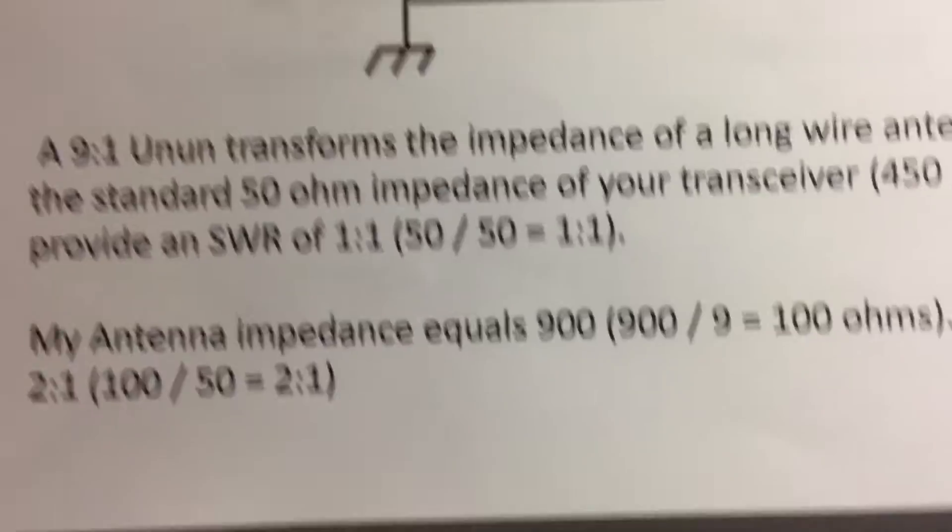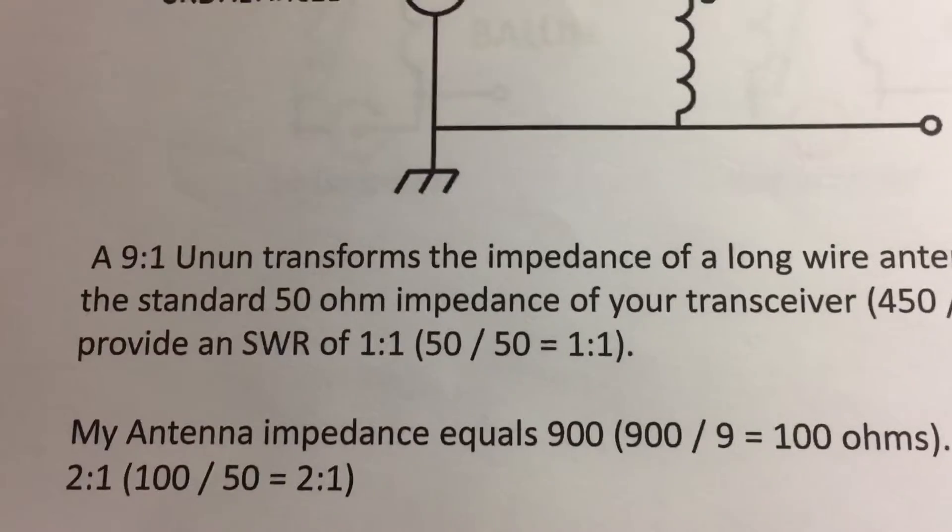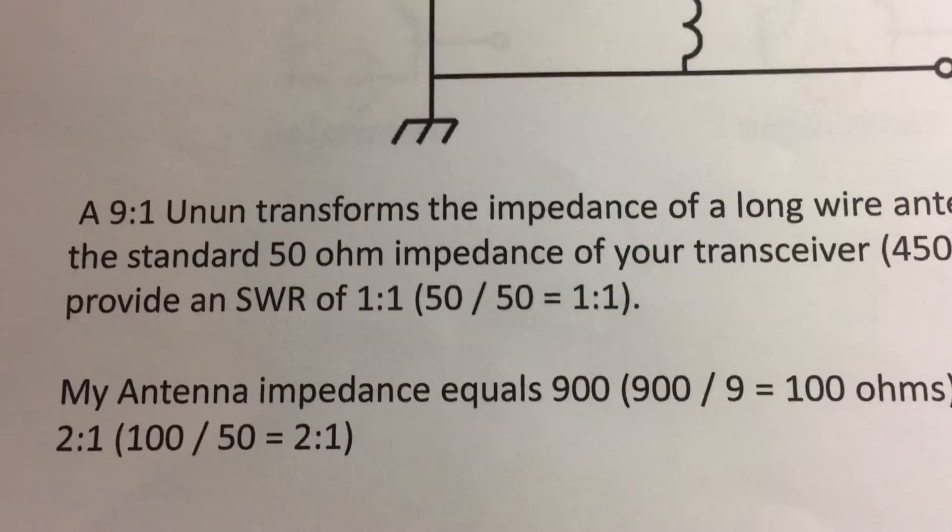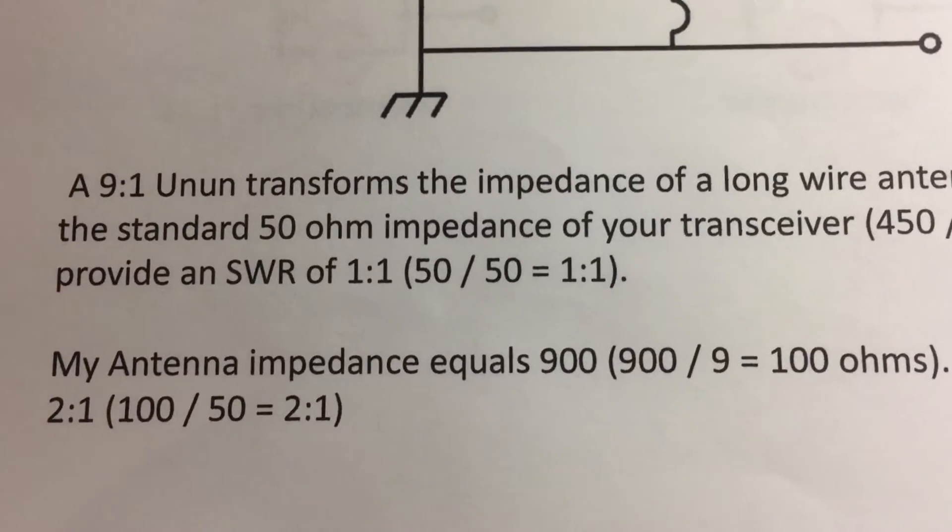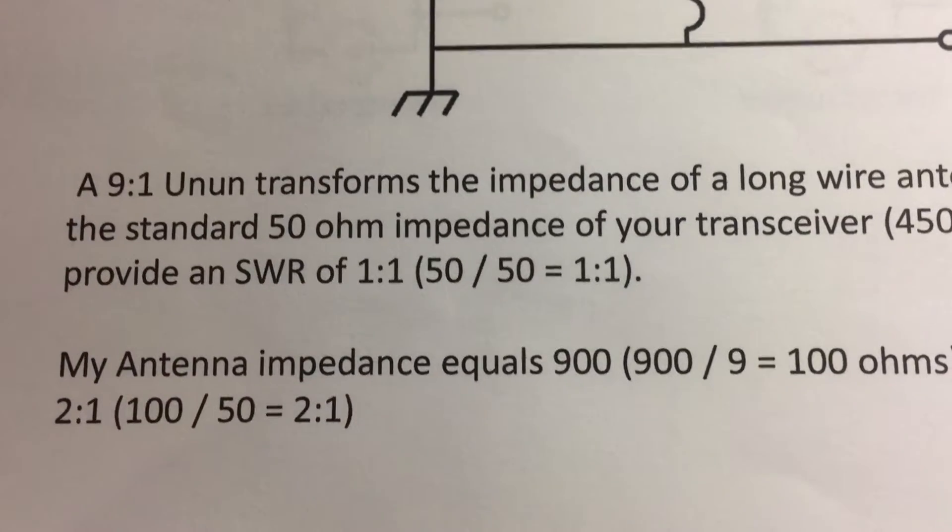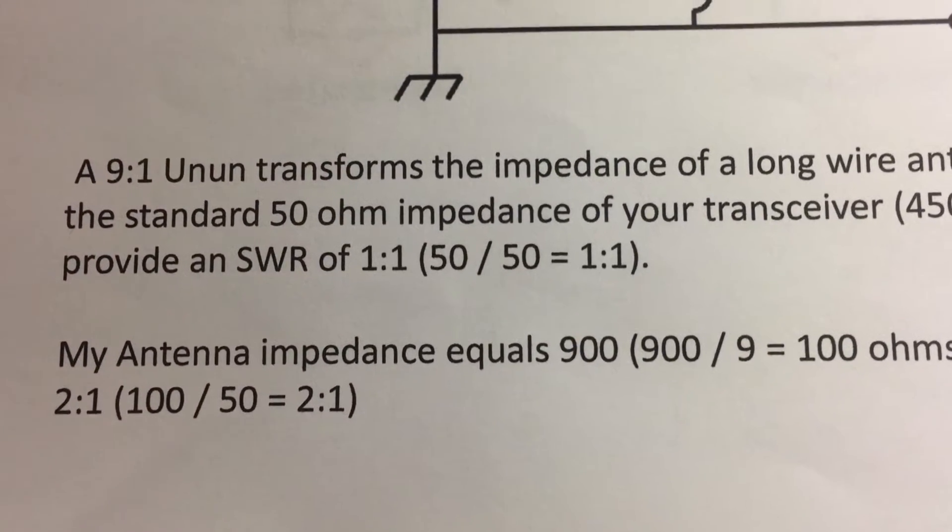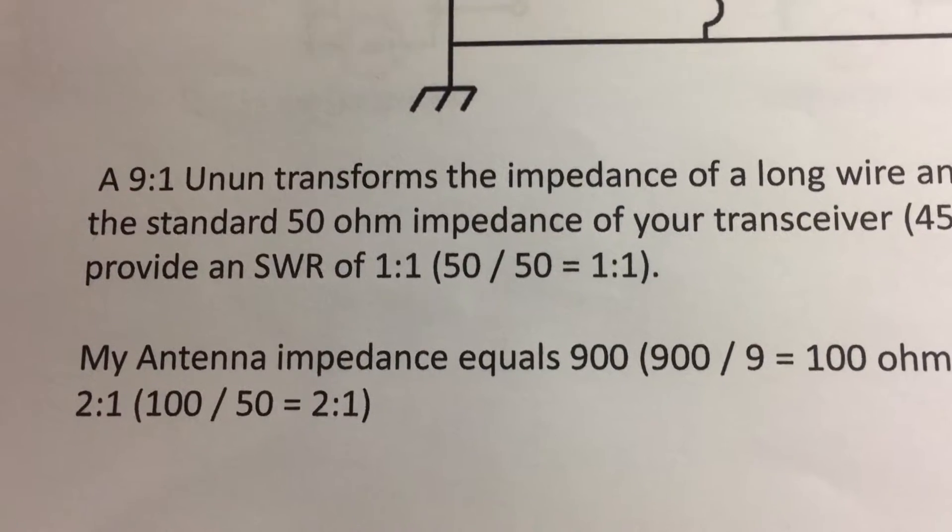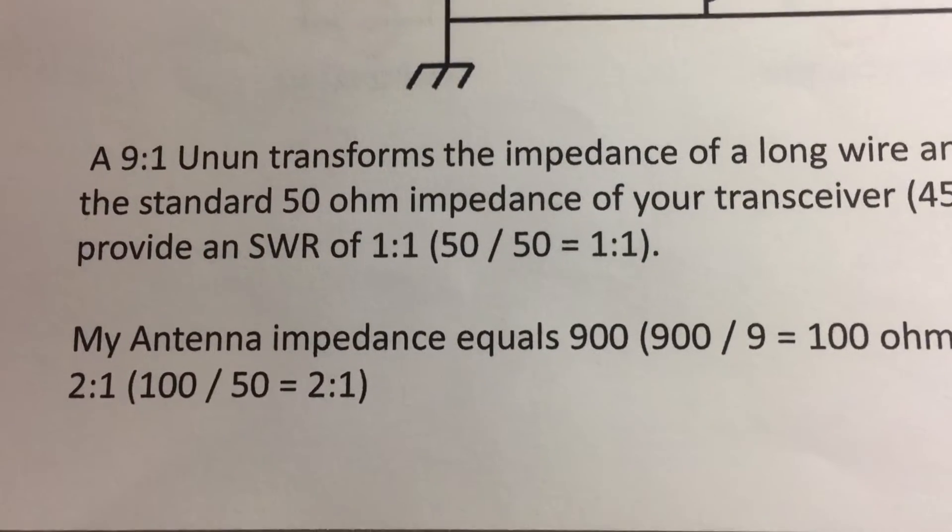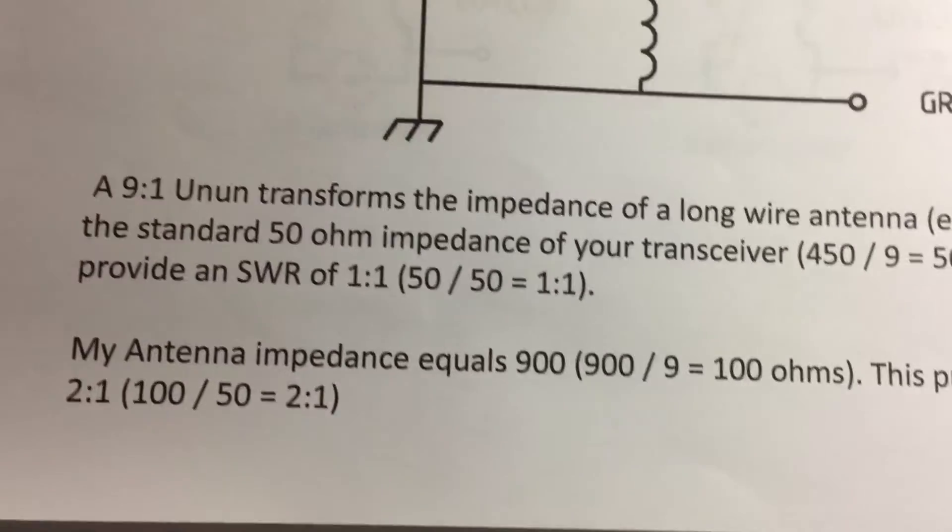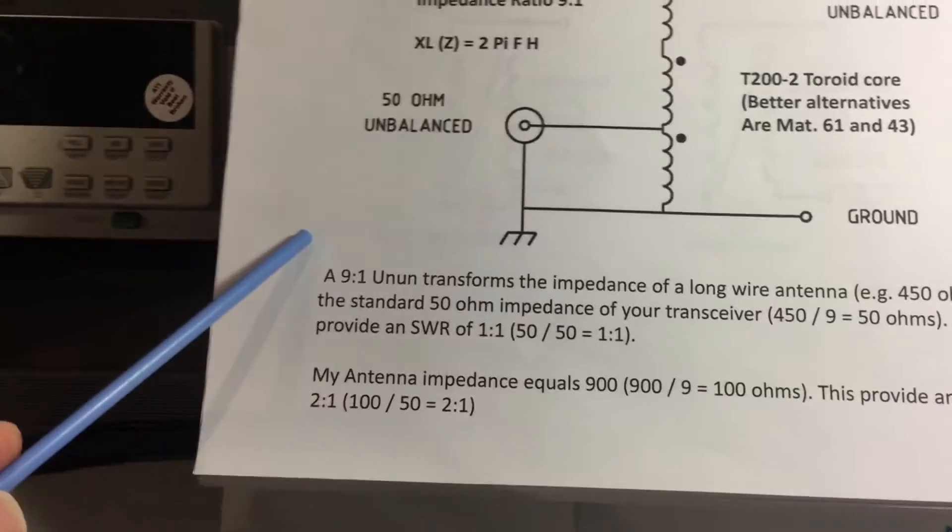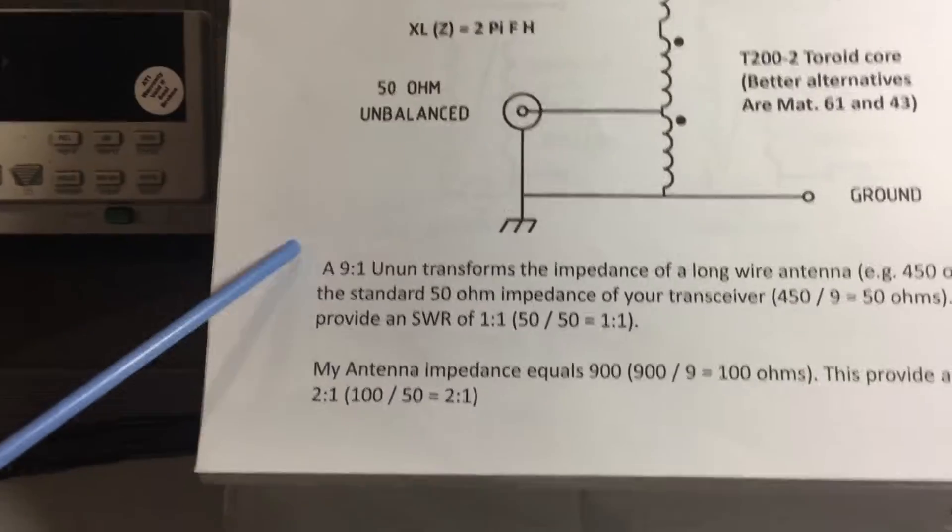So 100 divided by 50 gives us 2 to 1 ratio or 2 to 1 SWR. Now that's pretty good. Most antenna tuners, whether it be internal or external, are able to perform the impedance transformation. Typically it can tune an SWR of 2 or a little higher down to a 1 to 1 or 1.1 to 1, somewhere in that range. Very efficient transformation.